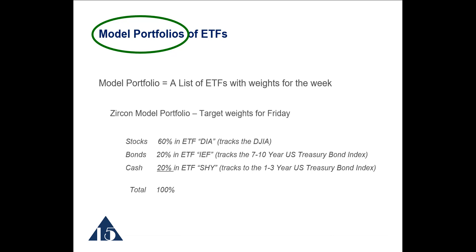This is just a hypothetical example — the date is not mentioned here. The Zircon model portfolio might have 60% of its entire weight in the ETF DIA, which tracks the Dow Jones Industrial Average; 20% in the ETF IEF, which tracks the 7–10 year U.S. Treasury Bond Index; and 20% in the ETF SHY, which tracks the 1–3 year U.S. Treasury Bond Index — a very cash-like Exchange Traded Fund. Your retirement account could be comprised of just those three ETFs, giving you a broad allocation across stocks, bonds, and cash at the target weights indicated.